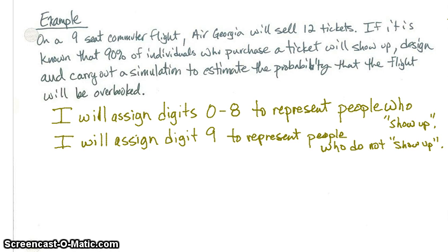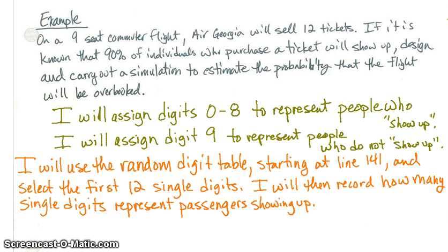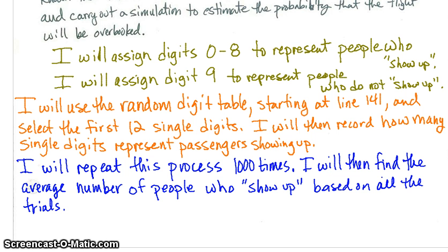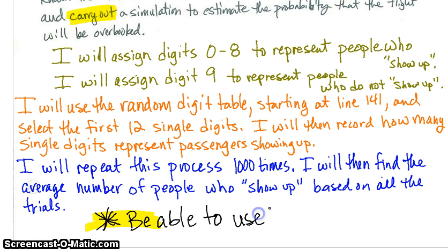I will use the random digit table starting at line 141 and select the first 12 single digits. I will then record how many single digits represent passengers showing up. I will repeat this process 1,000 times, then find the average number of people who show up based on all the trials. Also, as part of carrying this out, be sure to note that you are able to use the random digit table.